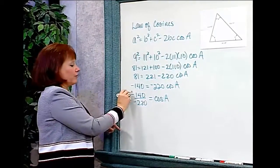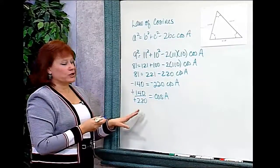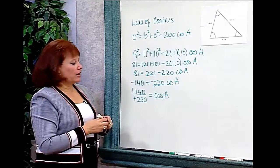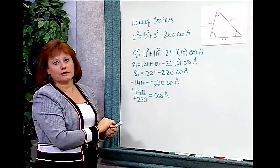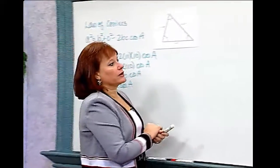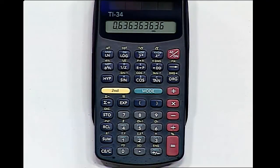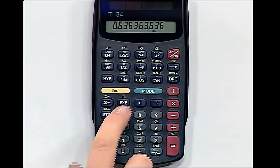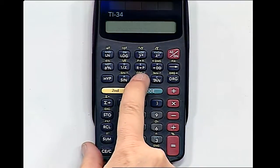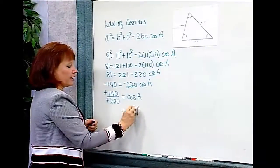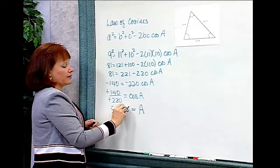I know that a negative divided by a negative gives a positive. You can reduce this fraction if you want, but you don't really need to as long as you're going to use your calculator. On the calculator, I'll take 140 divided by 220 and hit equals — that gives 0.636363. Now I want to find the inverse cosine, so I'll access the second function and cosine, and I find that it's equal to 50.4788 degrees. So angle A is equal to 50.4788 degrees.